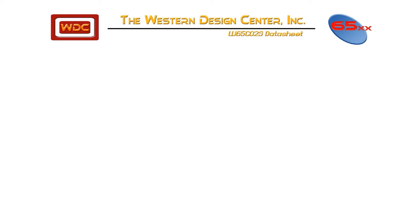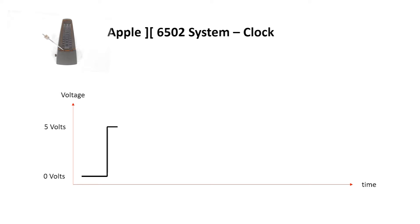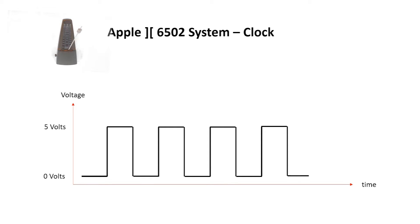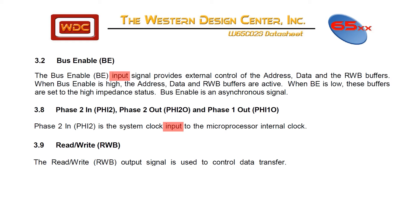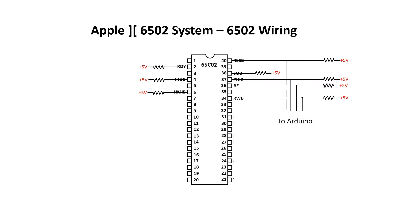Now we're down to the final four signals, and these are all inputs. Bus Enable: the bus enable input signal provides external control of the address, data, and read-write bar buffers. When bus enable is high, the address, data, and read-write bar buffers are active. When BE is low, these buffers are set to the high impedance, or floating, status. Bus enable will be needed particularly when the video circuit wants to access the memory. Phase 2 in, or Phi 2, is the system clock — remember the metronome from the introduction video. The read-write bar output is used to control data transfer, the same signal discussed in the introduction video. And finally, Reset — anybody who's used a computer knows what Reset does. So for now, we'll just tie all these four signals high and connect them to the Arduino. All right, let's build it.